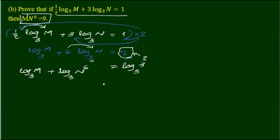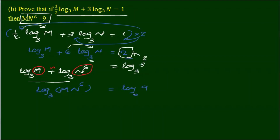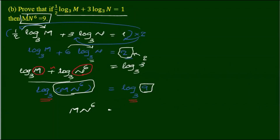Log n power 6 base 3. We have to take a look at log m into n power 6 base 3, equal to log base 3. So we have to take a look at log base 3. If you have log based on 2, it will be 2 and 2. m times n power 6 equals 9.